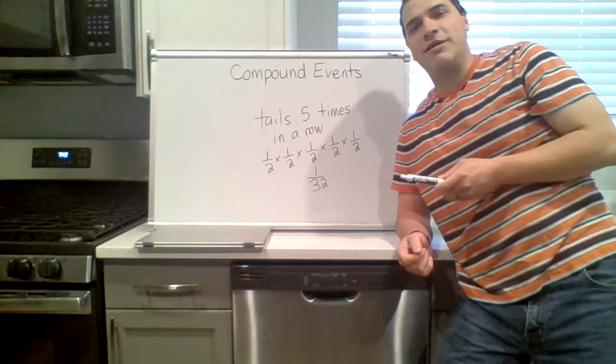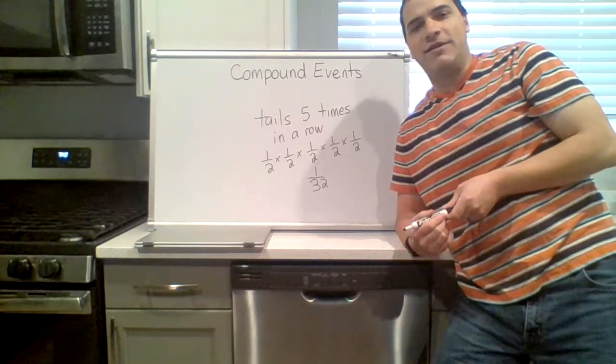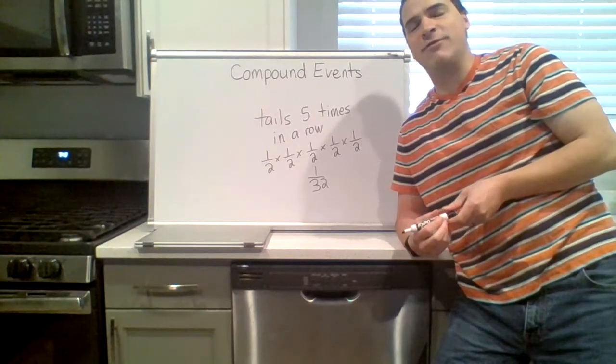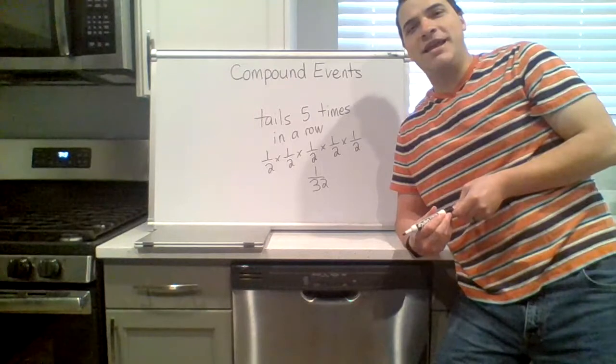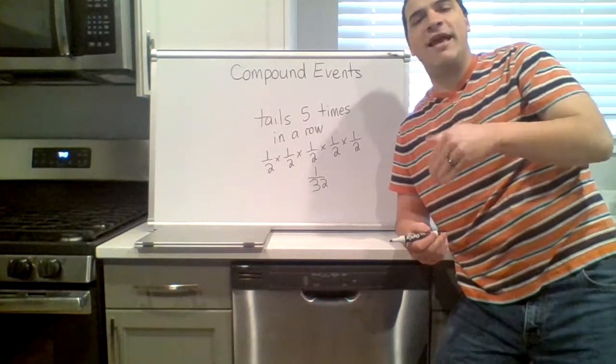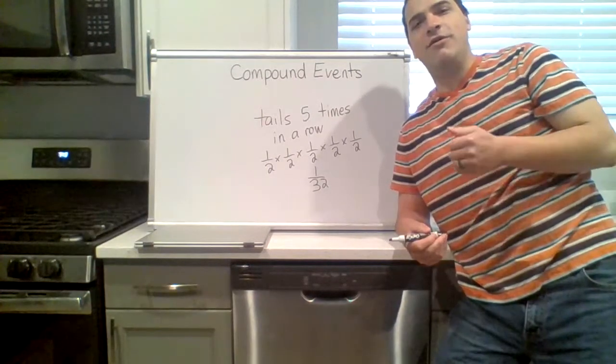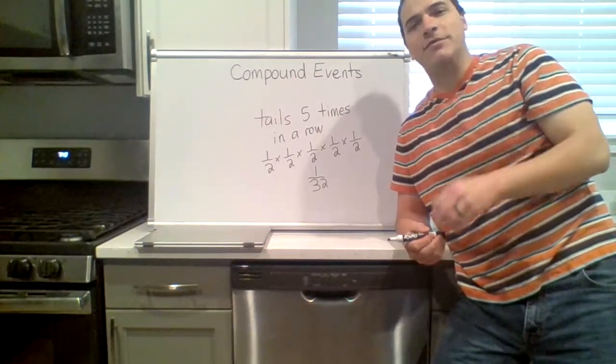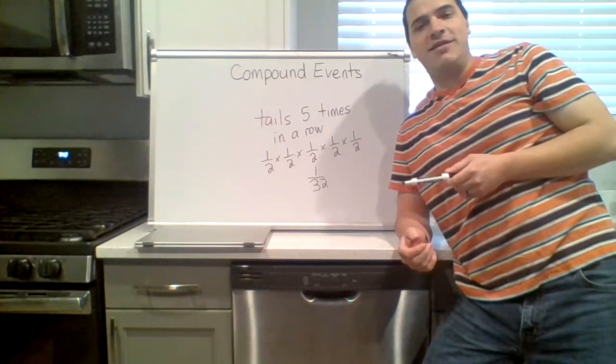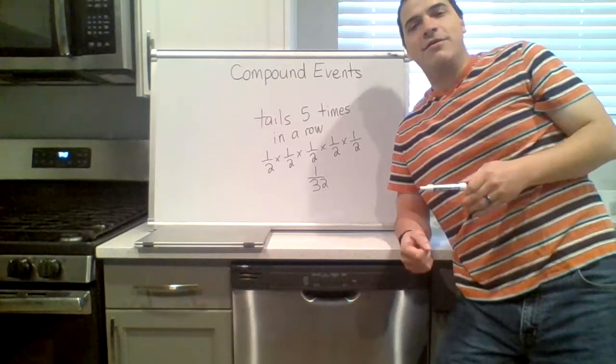The idea that the coin is due—that it was tails, tails, tails, tails, it has to be heads next. No. Each time it's a different outcome. So what's the probability the next coin flip is heads? Still one half. What's the probability the next coin flip is tails? Still one half.